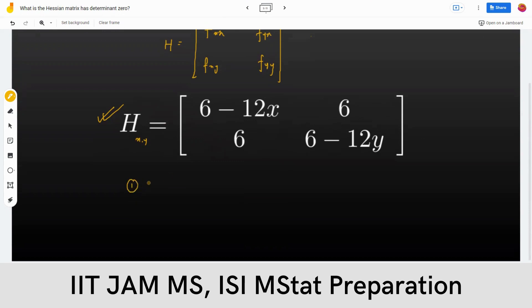If they're all positive, it's a positive definite matrix. Then at that critical point, if the Hessian matrix has positive eigenvalues, then that point is the minimum.